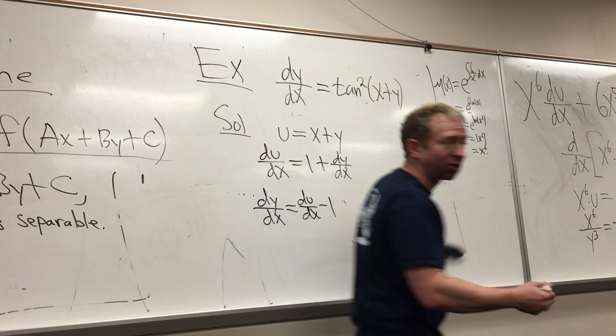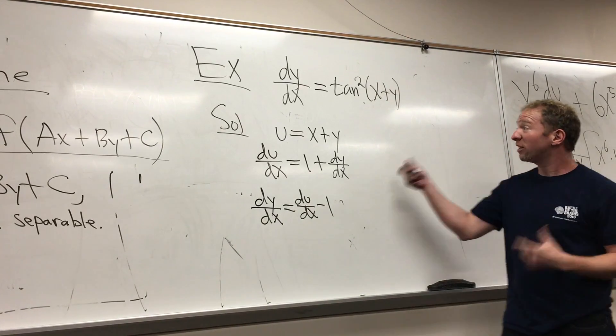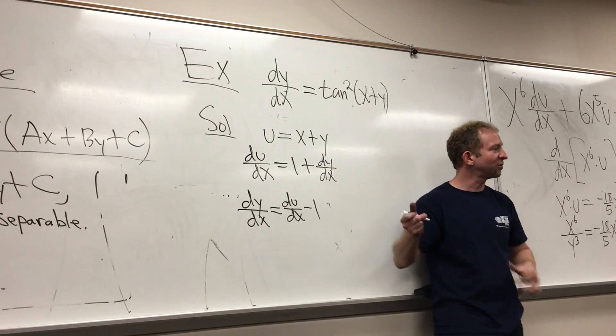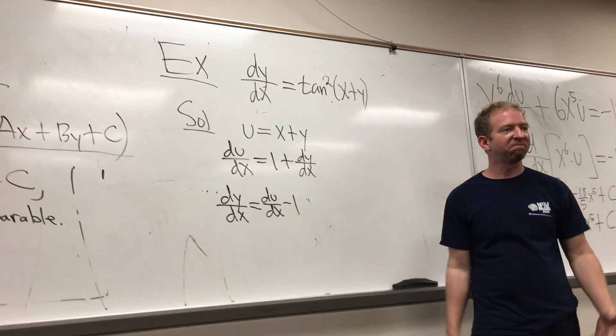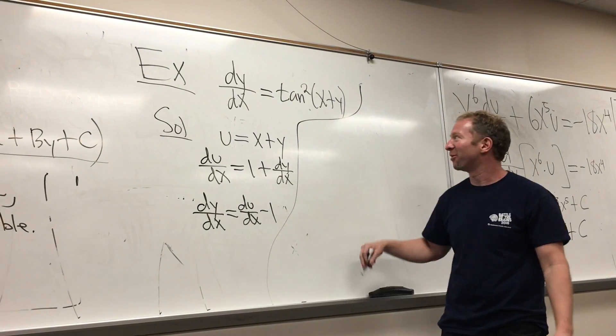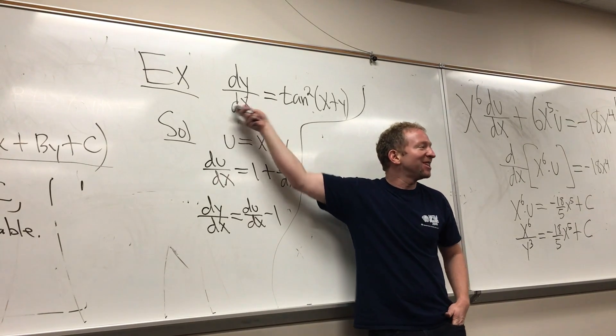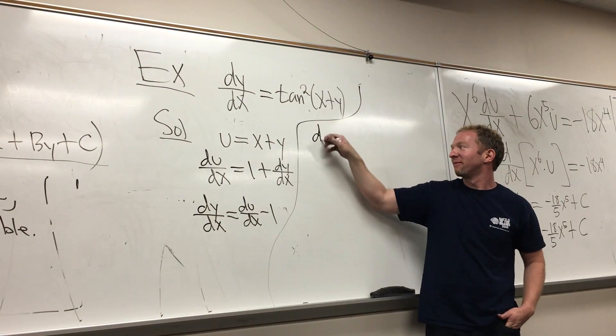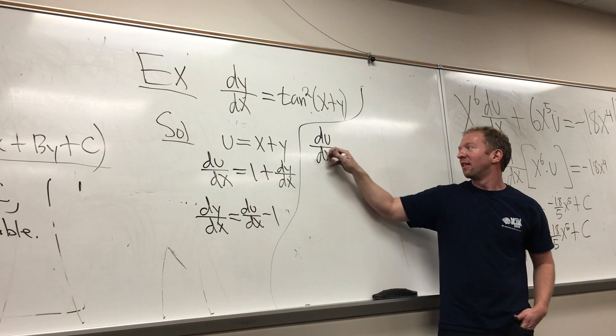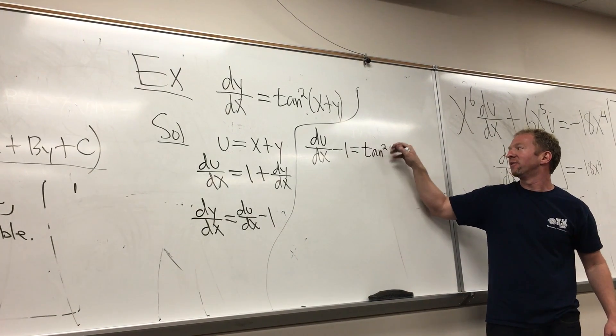So dy/dx is du/dx minus one. And then we should plug it in, and it should work out. These are actually very, very easy. We could have done this the first day, right? We could have done this after we did a second one, if we wanted to, right?